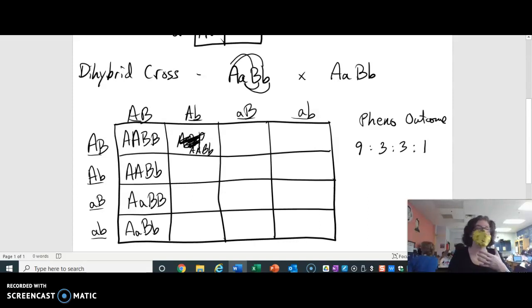So both of those things have to be true for you to get this. So if you know that there's nothing funky going on like gene linkage or anything like that, and if it's a classic dihybrid cross, you don't even have to do the Punnett square.